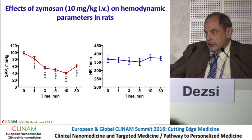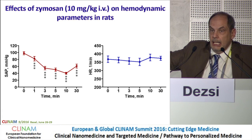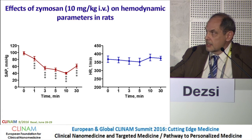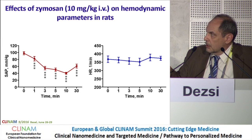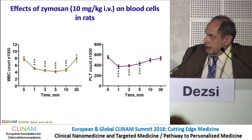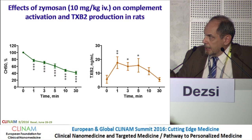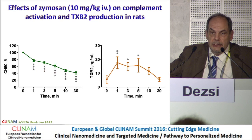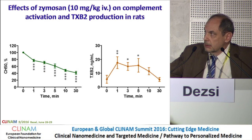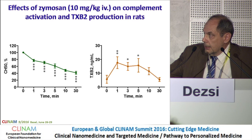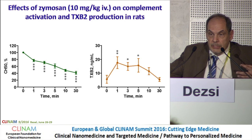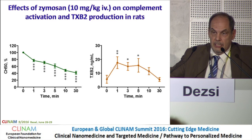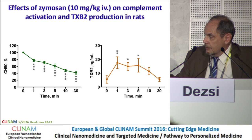In rats, we measure mostly systemic arterial pressure rather than pulmonary arterial pressure. In pigs at 0.1–0.5 mg/kg, you see not only elevation in pulmonary arterial pressure but also a decline in systemic arterial pressure. In rats, the main parameter is this transient decrease followed by recovery of systemic arterial pressure; heart rate doesn't change much. We also see leukopenia and thrombocytopenia. We measured complement activation by a hemolytic activity method using sheep red blood cells — complement activation means complement is consumed, so you see a decrease in complement level.